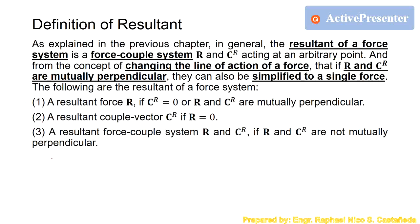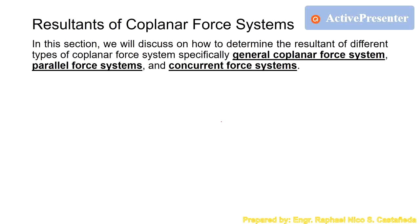The fourth case is when both R and C_R are zero — this is what we call equilibrium. We will discuss equilibrium in our next lecture video. Now let's start: remember we will have different types of coplanar force systems. In this section, we discuss how to determine the resultants of different types of coplanar, or two-dimensional, force systems.